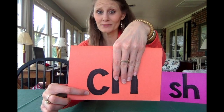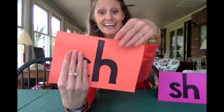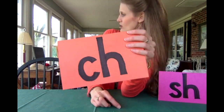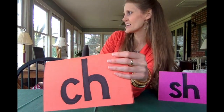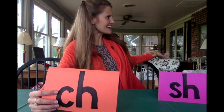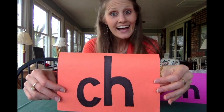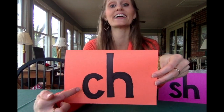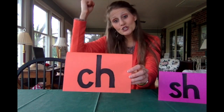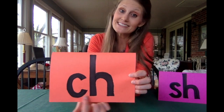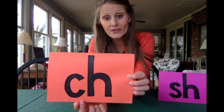C by itself normally says 'kuh,' and H by itself normally says 'huh.' But when C and H look at each other, the H says to the C, 'Hey, let's hug together.' And the C says, 'Hey, that's a great idea.' They hug together and decide to make a brand new sound. They no longer say 'kuh' — they say 'chuh,' like a choo-choo train. So C-H is the digraph you have been watching videos on this week.